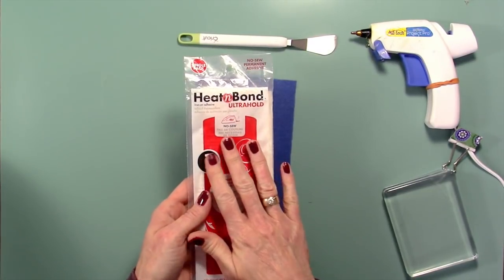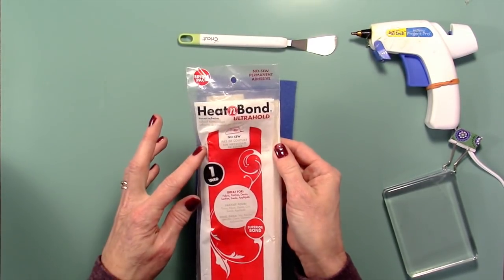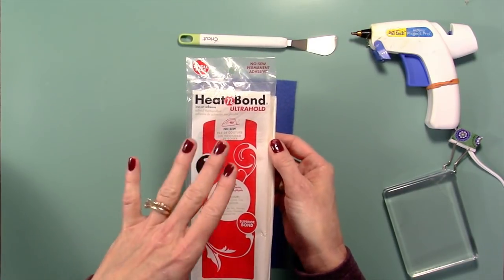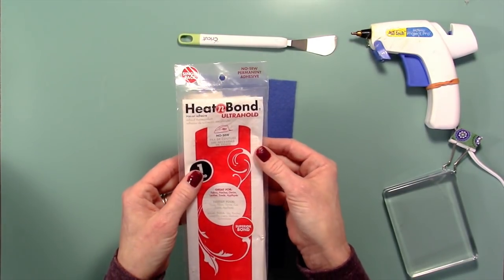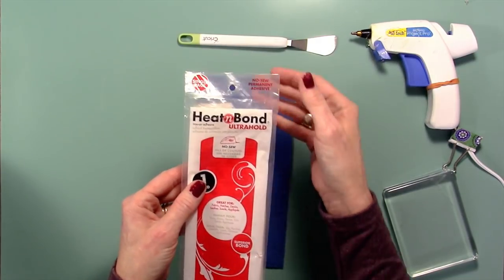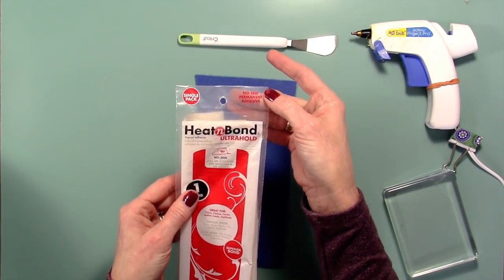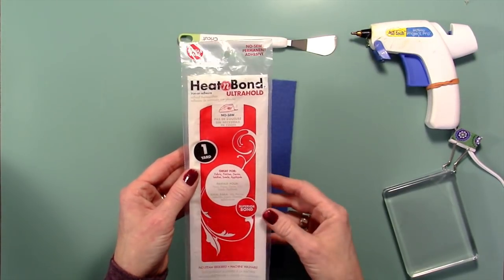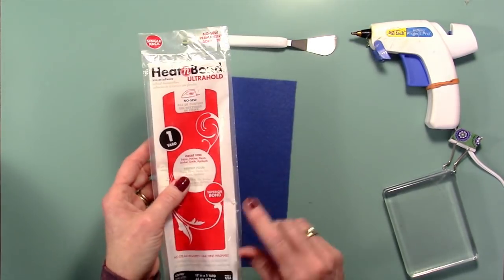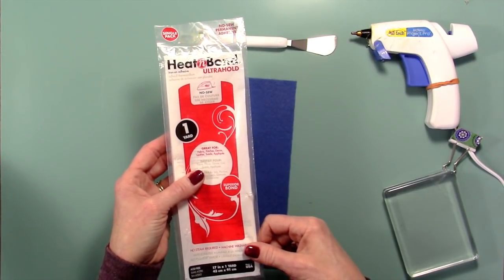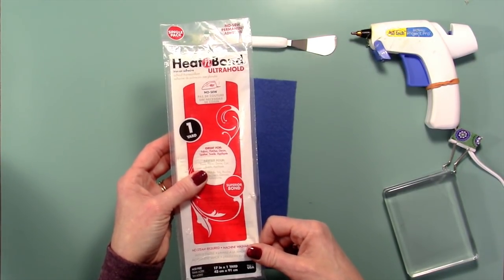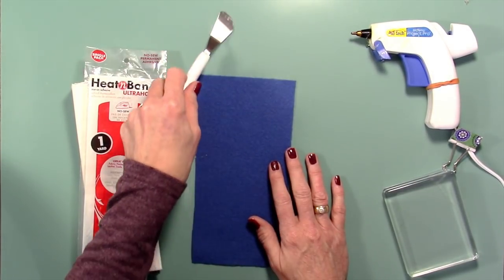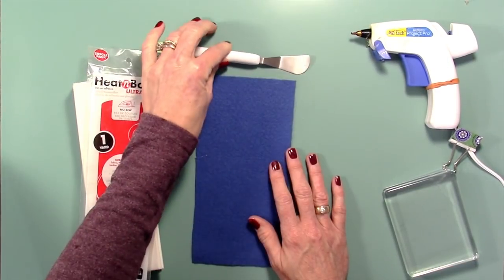I have Heat and Bond Ultra Hold. This is made by Thermoweb. I prefer this one. You can use any kind of fabric bonding agent, but this is the one that I used and the only one I've tried. So I'm not sure how the others would work. This one says no sew permanent adhesive. This is also available at any of your craft stores, Walmart, wherever. And this is one yard, 17 inches by one yard. I also have my spatula. You're going to want a spatula or something to get the felt off of your mat.